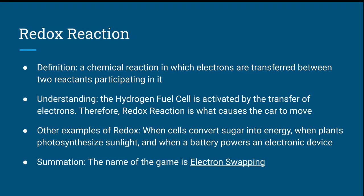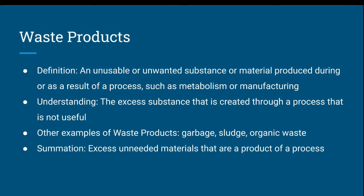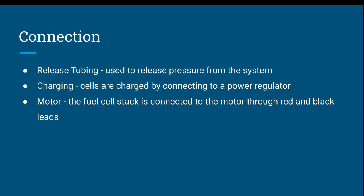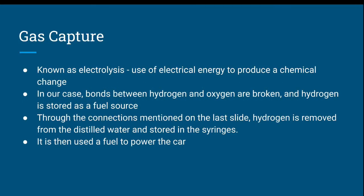The name of the game is electron swapping. Waste products — definition: an unusable or unwanted substance produced during or as a result of a process such as metabolism or manufacturing. The excess substance created through a process that is not useful. Other examples of waste products include garbage, sludge, and organic waste. Regarding connections: release tubing is used to release pressure from the system. Cells are charged by connecting to a power regulator. The fuel cell stack is connected to the motor through red and black leads. Gas capture, known as electrolysis, is the use of electrical energy to produce a chemical change. In our case, bonds between hydrogen and oxygen are broken and hydrogen is stored as a fuel source. Hydrogen is removed from the distilled water and stored in syringes, then used as fuel to power the car.